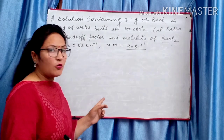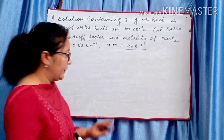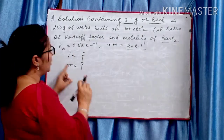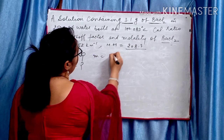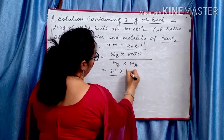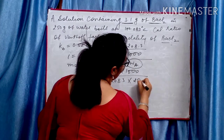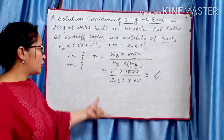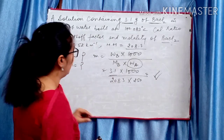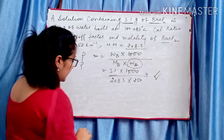Fourth numerical: A solution containing 3.1 grams of barium chloride in 250 grams of water boils at a given temperature. Calculate ratio of Van't Hoff factor and molality. Kb and molar mass are given. First find molality M = WB × 1000 / (MB × WA) = 3.1 × 1000 / (208.3 × 250). Then find observed molar mass using MB = Kb × WB × 1000 / (delta TB × WA). Kb = 0.52, WB = 3.1, WA = 250.